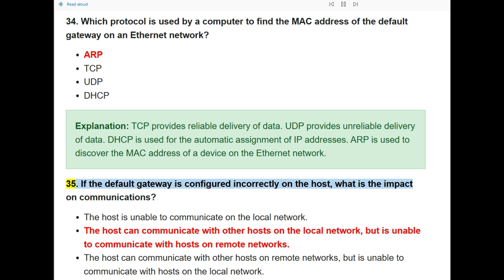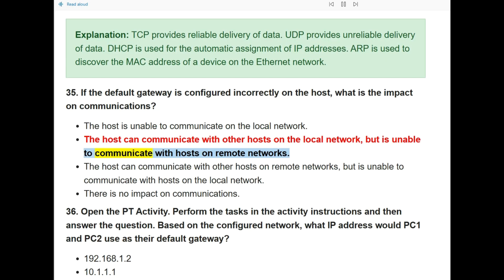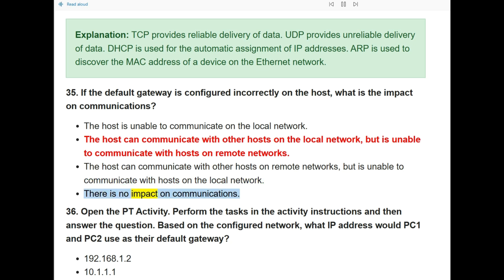Question 35: If the default gateway is configured incorrectly on the host, what is the impact on communications? The answer is: the host can communicate with other hosts on the local network but is unable to communicate with hosts on remote networks.